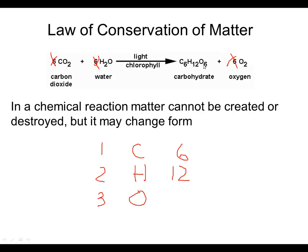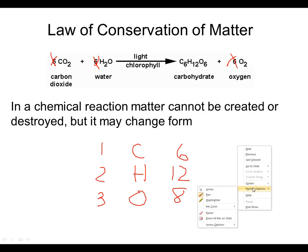On the product side, there would be six carbon atoms, 12 hydrogen atoms, and six oxygen atoms in the carbohydrate plus two more from the oxygen molecule—totaling eight oxygen. These numbers don't balance. Without the coefficients, this would imply that matter was created in the reaction, which obviously can't happen. The law of conservation of matter requires us to correctly depict the total number of atoms on each side so there is no creation or destruction of matter.